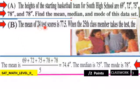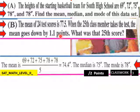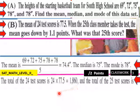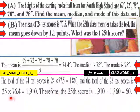B, the mean of 24 test scores is 77.5. When a 25th class member takes the test, the mean goes down by 1.1 points. What was the 25th score? So the total of the 24 test scores, 24 times 77.5, is 1860. And the total of the 25 test scores is 25 by 76.4. The mean goes down by 1.1 points. So 77.5 minus 1.1 is 76.4. So 25 by this number equals 1910. Therefore, the 25th score is 1910 minus 1860, which is a 50.